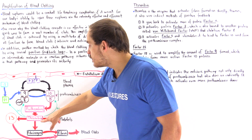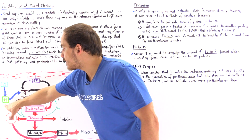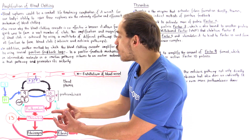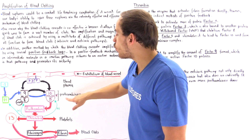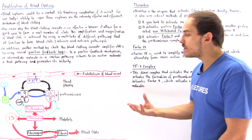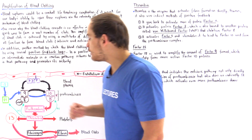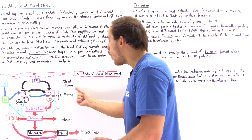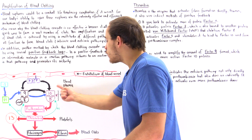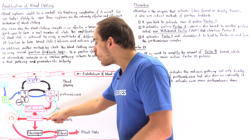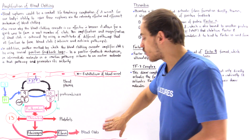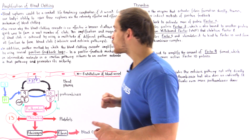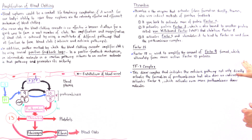Thrombin activates this complex, it activates factor 11, and it also directly activates factor 5, causing it to bind onto factor 10, once again forming prothrombinase. All three positive feedback loops carry out the same exact function: to form more of these prothrombinase molecules, which eventually form more thrombin, and that ultimately forms more blood clots needed to seal off the rupture in our blood vessel.